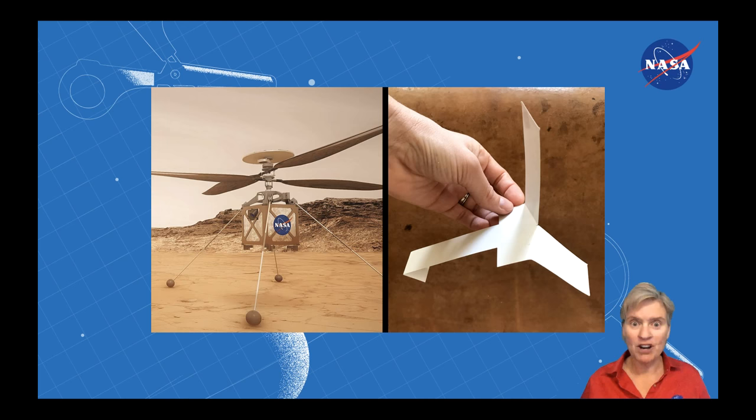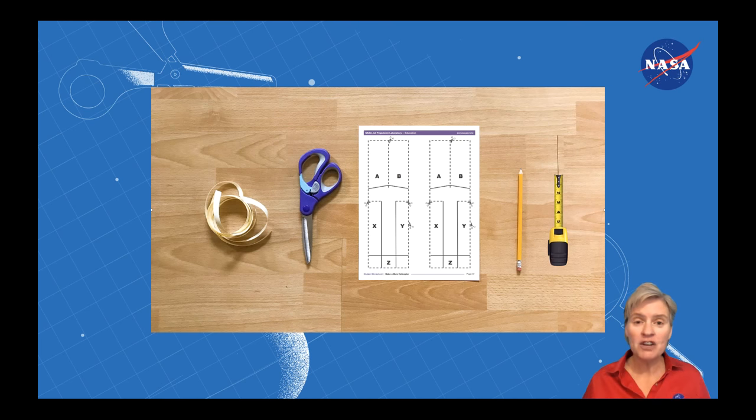Now it's time for you to make a Mars helicopter. You're going to need a few things. First, you're going to need either the printed template from this activity or a blank piece of paper that you can sketch that template onto, a pencil, a pair of scissors, a measuring tape, and if you have it, a little strip of ribbon.